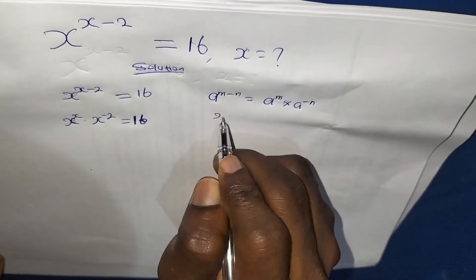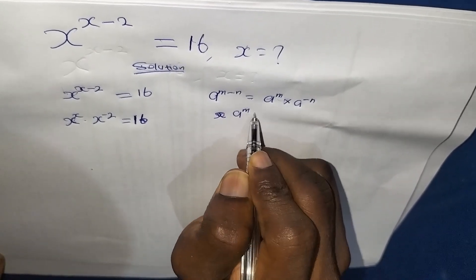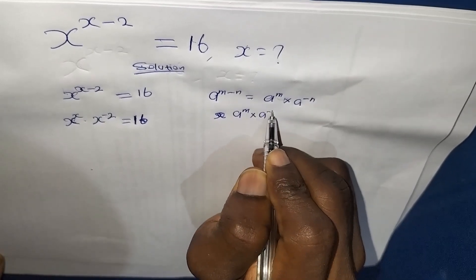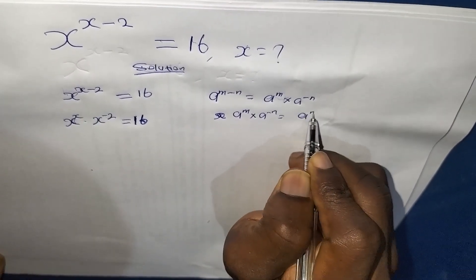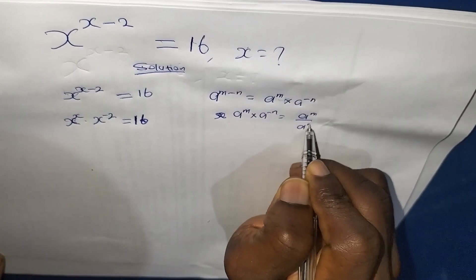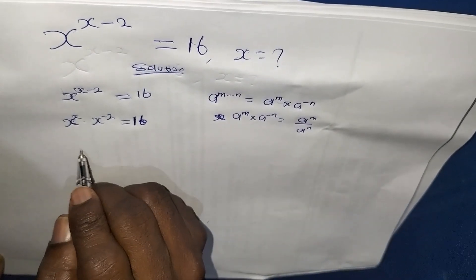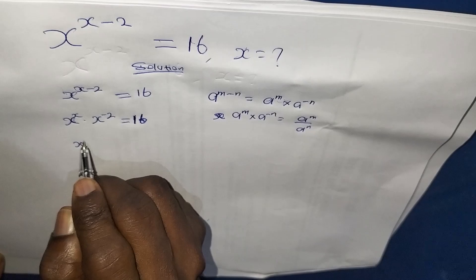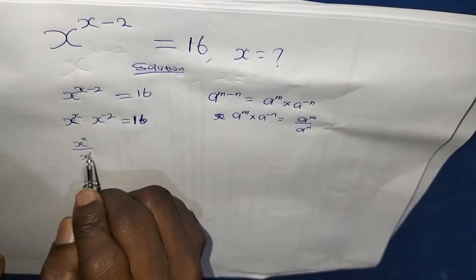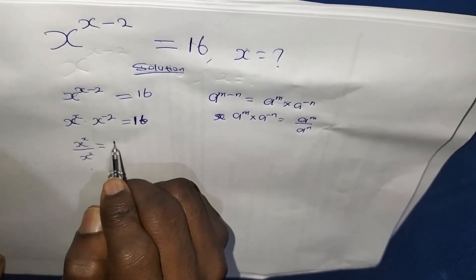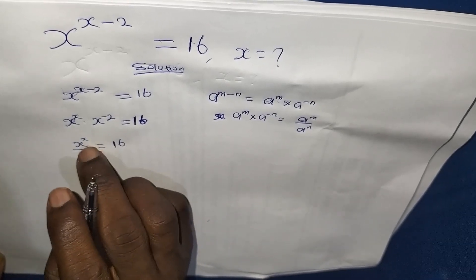Also, from indices, if you are having a to the power of m times a to the power of negative n, that is equals to a to the power of m over a to the power of n. Applying this, I can write this to be x to the power of x all over x to the power of 2 is equals to 16.